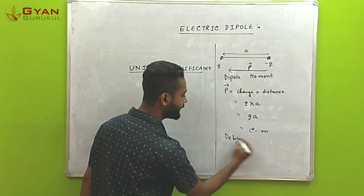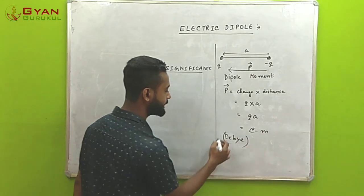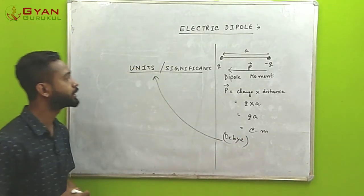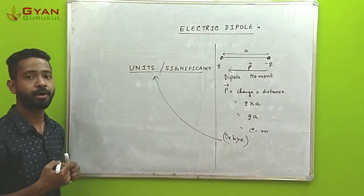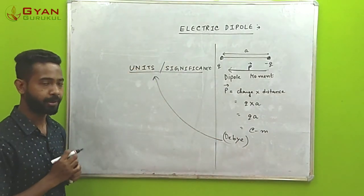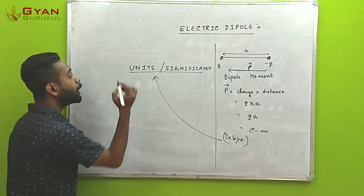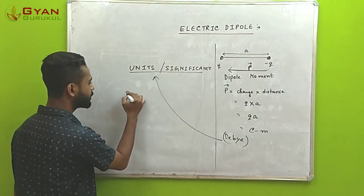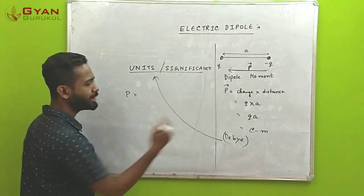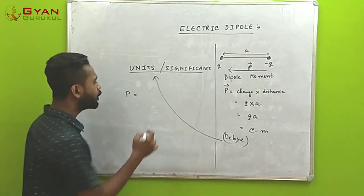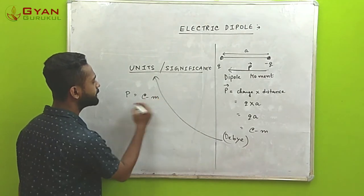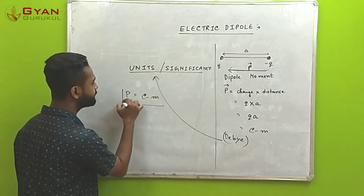Debye is also a unit of dipole moment. Out of the two units, when dealing with numerical problems in physics, we use Coulomb-meter.